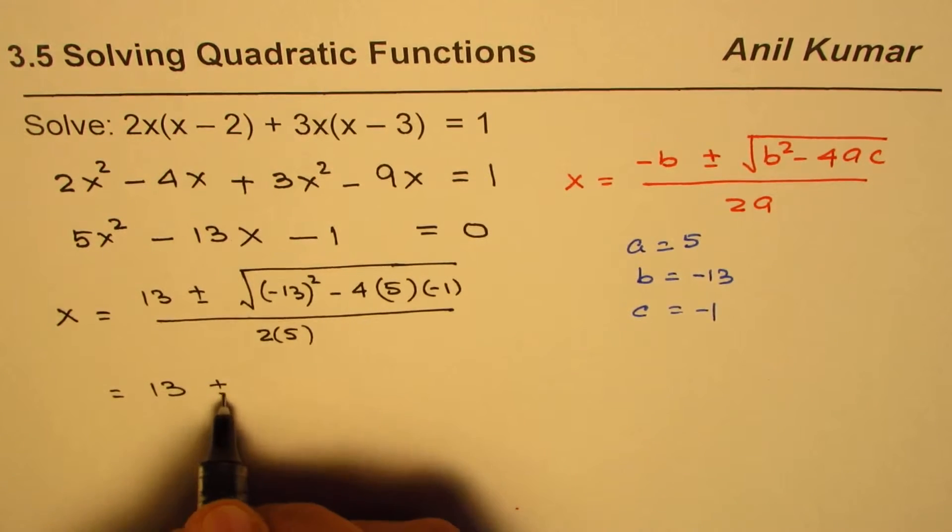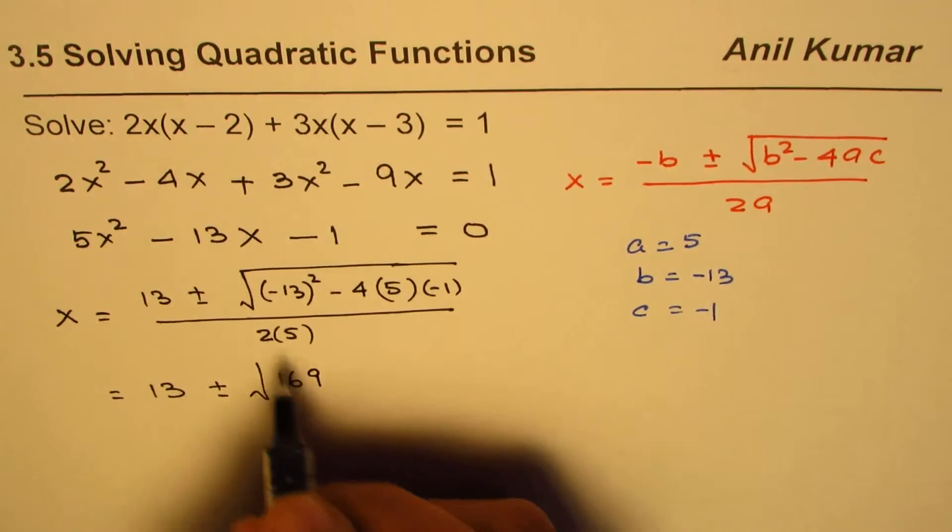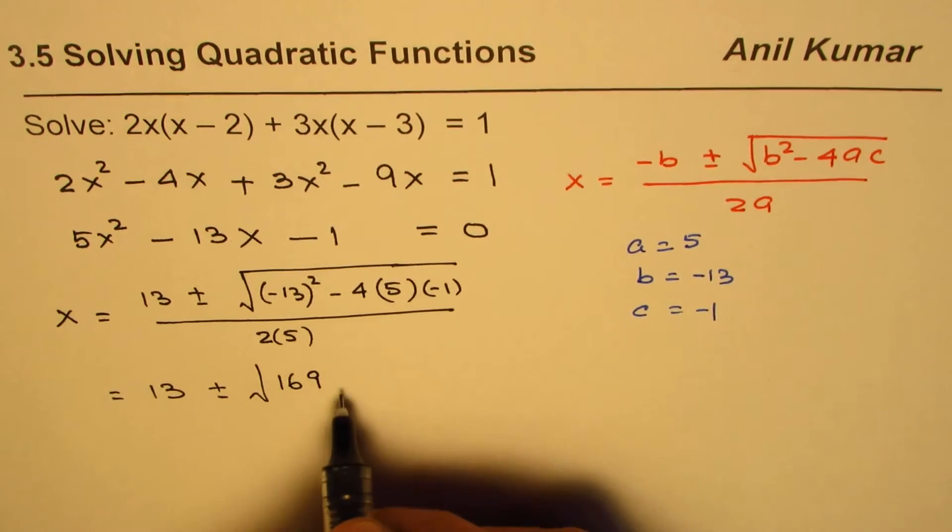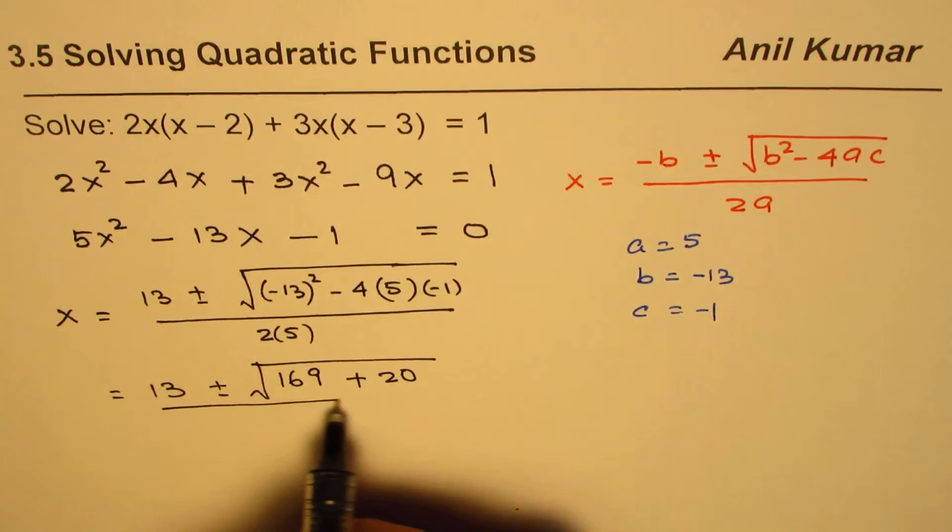That gives us 13 plus or minus square root of, square is 169, positive. Minus minus makes it plus, 4 times 5 is 20, divided by 10.